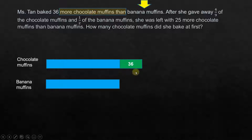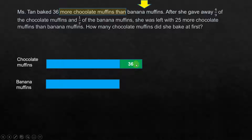That is the number of chocolate muffins we have. Now, after she gave away 4/9 of the chocolate muffins and half of the banana muffins — when we come to the chocolate muffins, we have an unknown part and a known part. When we want to find a fraction of this, we consider the unknown part and the known part separately. We take 4/9 of each separately. When we say 4/9, we divide into 9 equal parts and take away 4; similarly, we divide the banana muffins into 2 equal parts and take away 1.